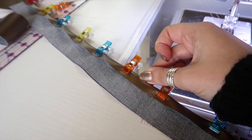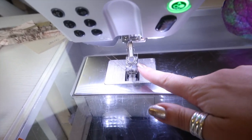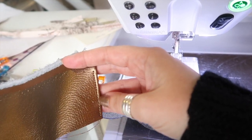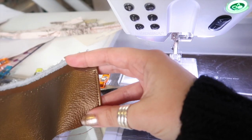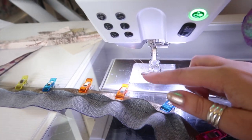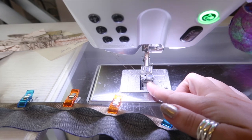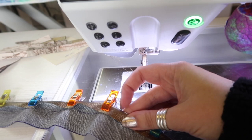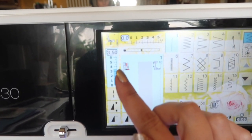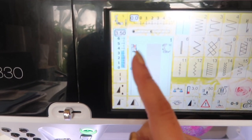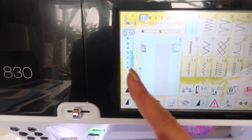I have my blind hem foot on. Although, given that I'm working with vinyl, you want to test a piece first to make sure that it is going to slide underneath the presser foot in the correct manner. You may need to have a Teflon foot or a roller foot. Thankfully, this one is working for me with just the blind hem foot on, and I like to use this one because it has a guide down the middle that I can run up against the folded edge here. And I've increased my stitch length to 3.5. You're going to want to make a note of the top stitching length that you pick.